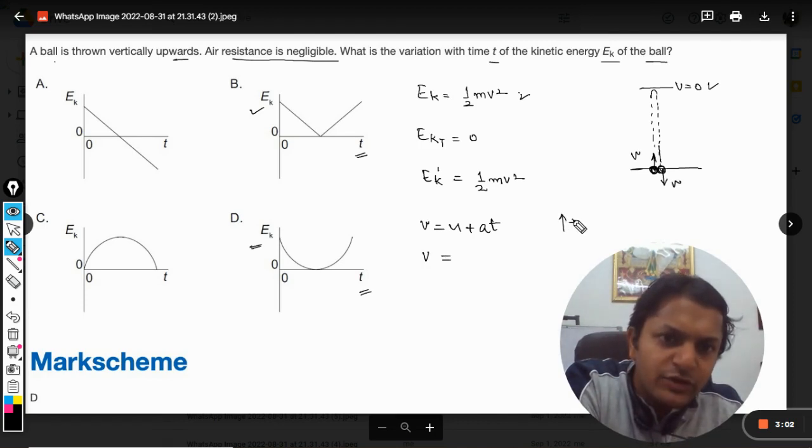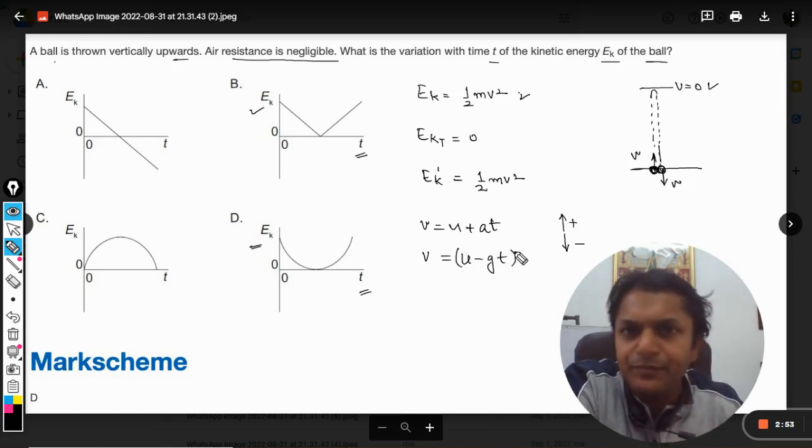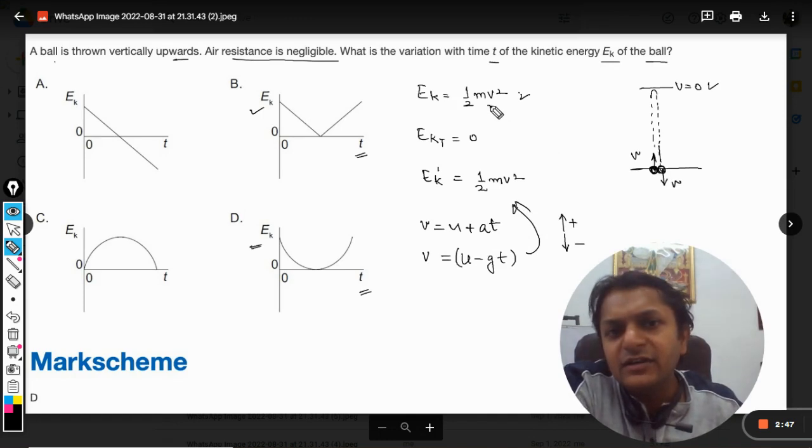Now here we would be taking the directions into account. Let us say positive upward direction is positive, downward is negative. So I can say that the final velocity will be given by u minus g t.